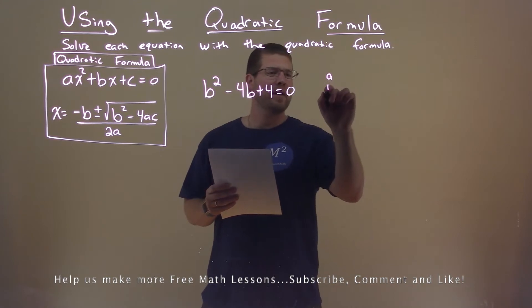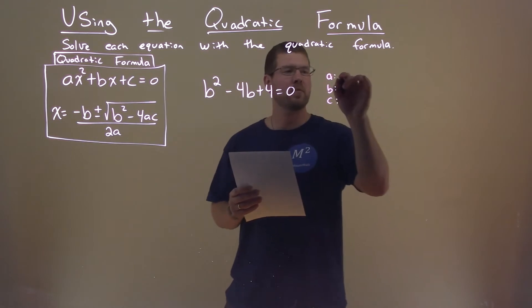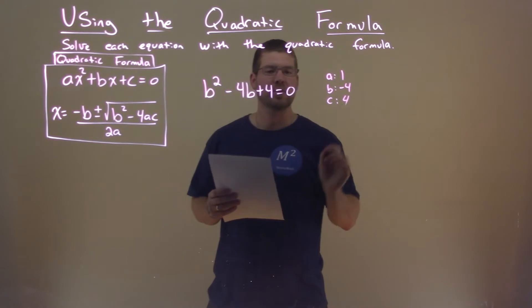Let's go find my a, b, and c value. The a value, the coefficient of b squared, is 1. The b value is negative 4 here, and the c value is 4.